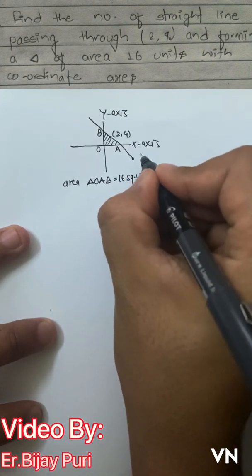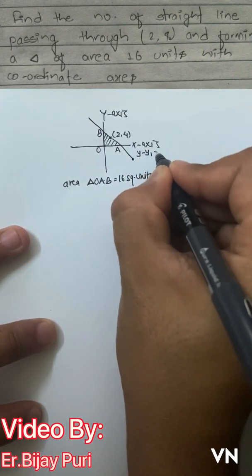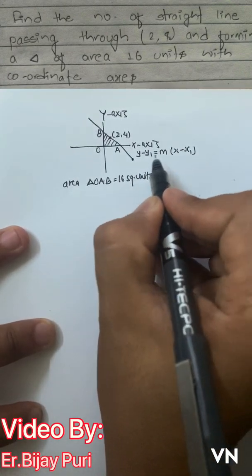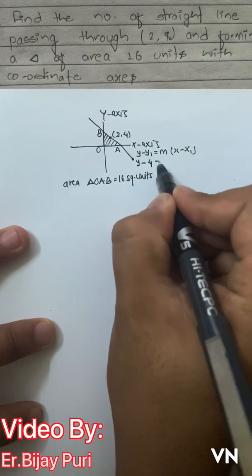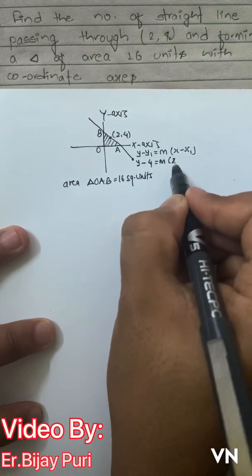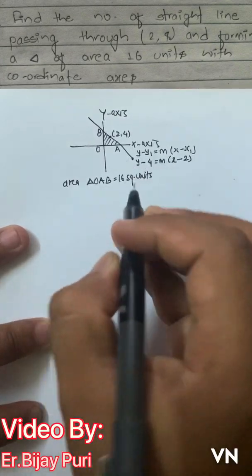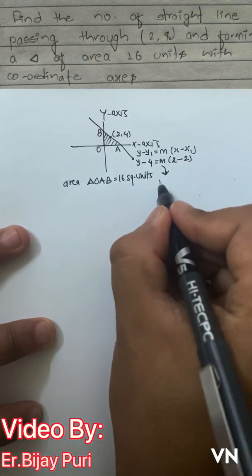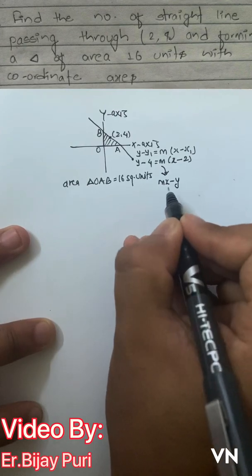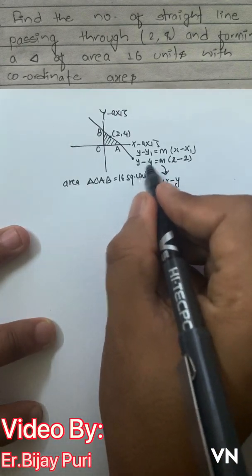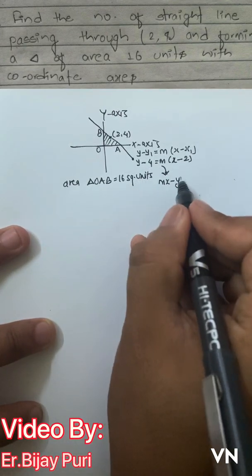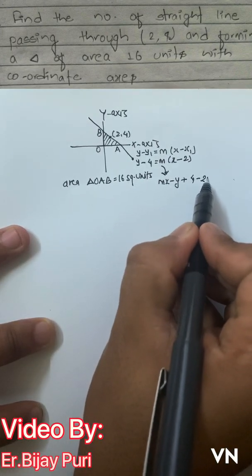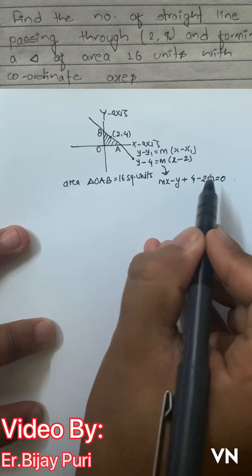What is the equation of this line? In slope form we can write: y − y₁ = m(x − x₁), that is y − 4 = m(x − 2). If we arrange this equation, we get mx − y + (4 − 2m) = 0.